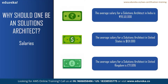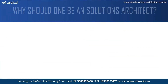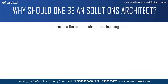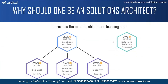Adding to the list of reasons to become a Solutions Architect, the fifth point is that it provides the most flexible future learning path. After you are certified as a Solutions Architect at the associate level, you can either opt for the professional level or choose any of the specialty certifications such as big data, machine learning, or security.